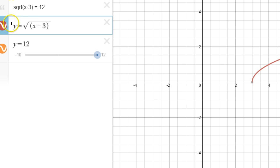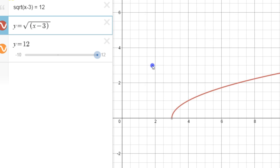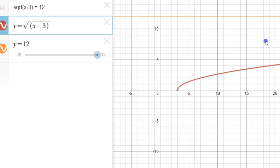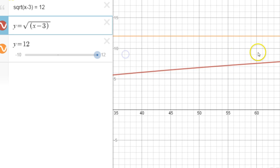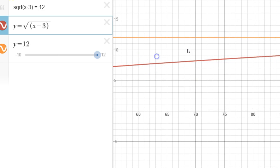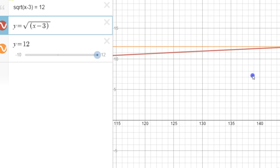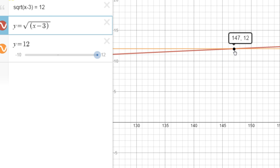You have y equals up here too so that you understand how it works. Then you zoom out. Y equals 12 is up there. So what you do is you drag your graph over until you get to the intersection. And voila, your answer is 147 is what x is going to be.